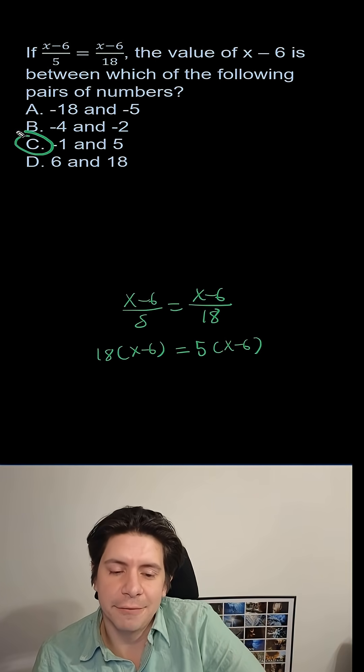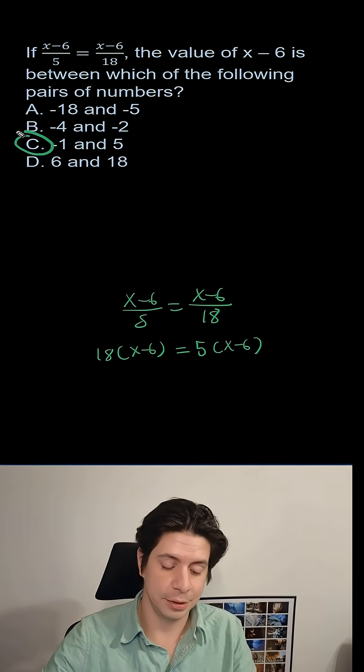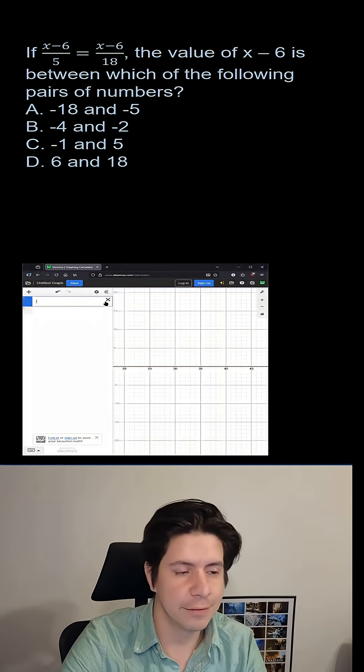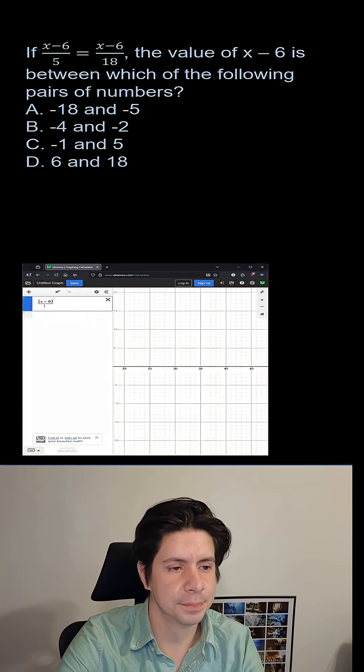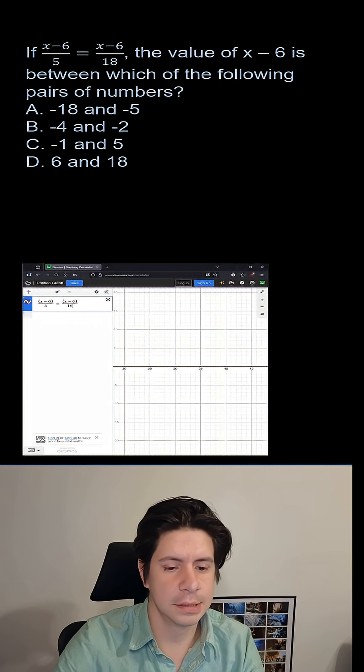Now we can graph it. You'll get a value for x and you'll see that you have to subtract 6 from it. Let's try it that way too. If we graph this, we're going to have (x-6)/5 = (x-6)/18.